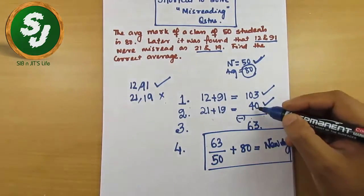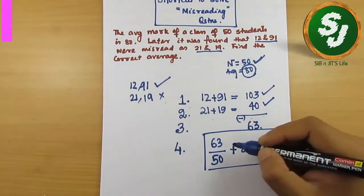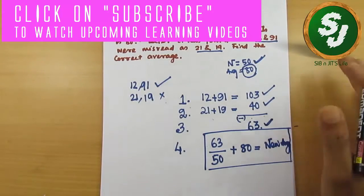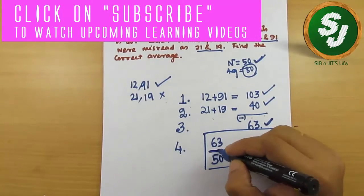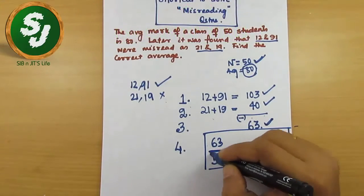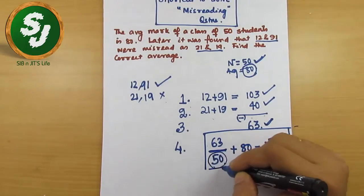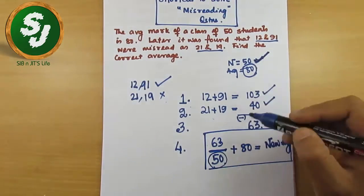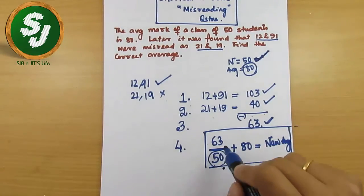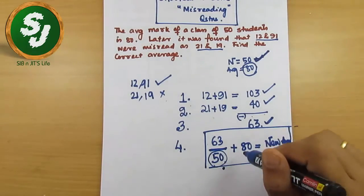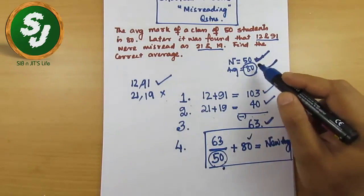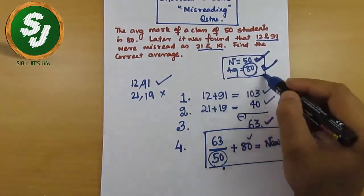Now when you get this, now it is obvious there is not so much hard work. You just write 63 divided by number of students. Remember that here in the denominator part there will be the number of students, whatever number of students you have written here, just write it down here: 63 by 50 plus the average that you had written, so 80 is the average given in the question. Plus 80, this is your new average.